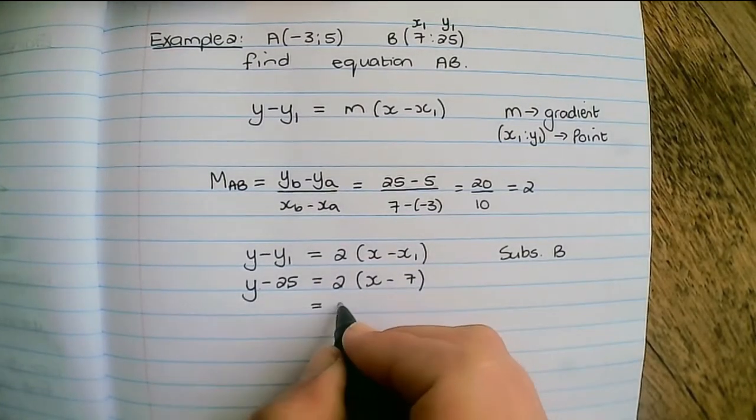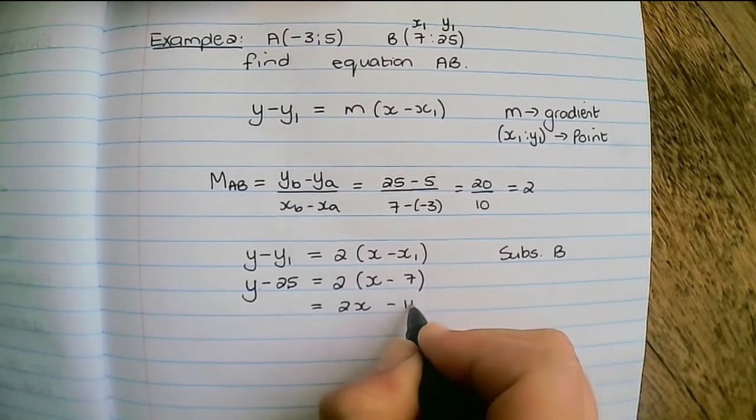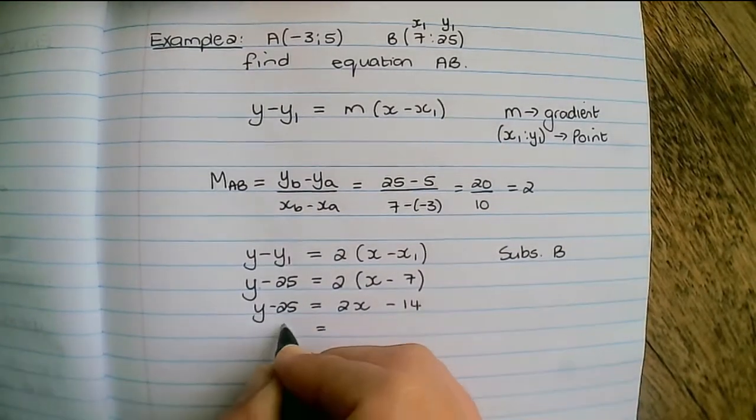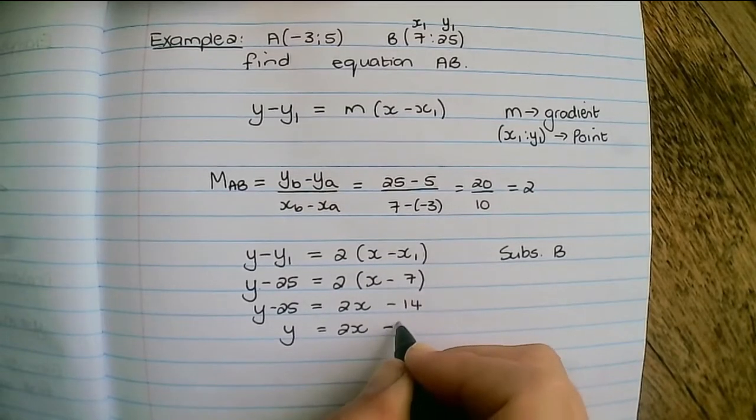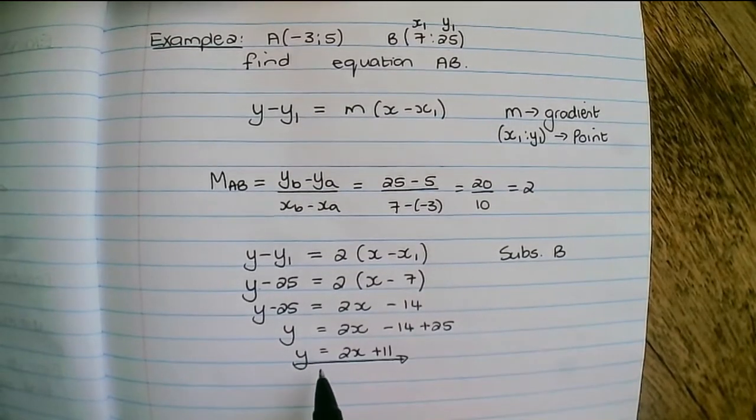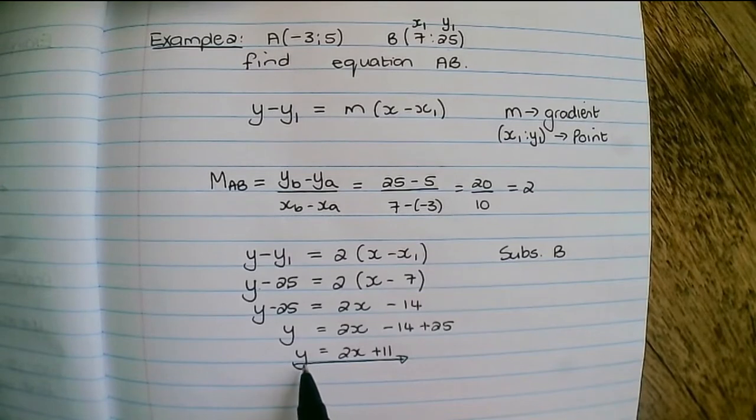Then I multiply out, it's 2x minus 14, and I move the 25 over to solve y. So the equation of line AB is y equals 2x plus 11.